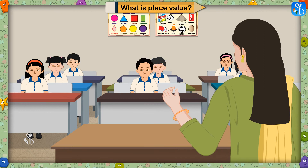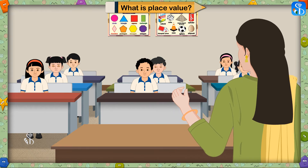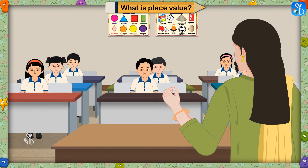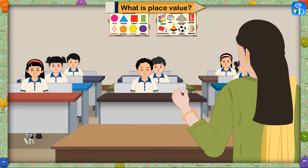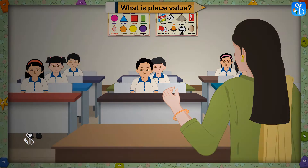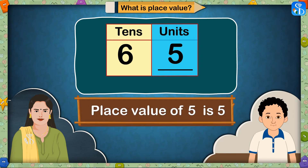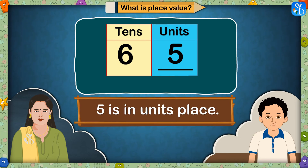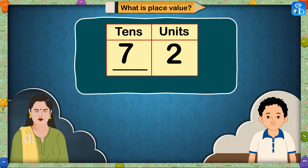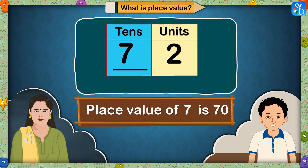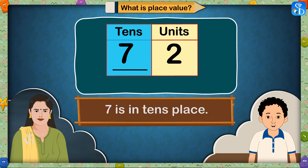Children, now I will display some numbers here. You have to tell me the place value of the underlined digits in these numbers and give reasons for them. What is the place value of 5 in the number 65? The place value of 5 is 5 only, as it is in units place. What is the place value of 7 in the number 72? The place value of 7 is 70, because 7 is in tens place.